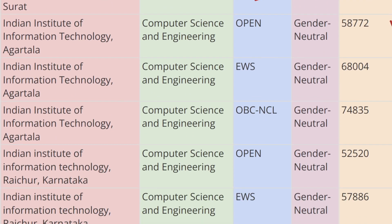Next in the list we have IIIT Agartala. For Open category the last rank was 58,772 for Computer Science and Engineering, for EWS category the cutoff rank was 68,004, and for OBC-CL the cutoff rank was 74,835.